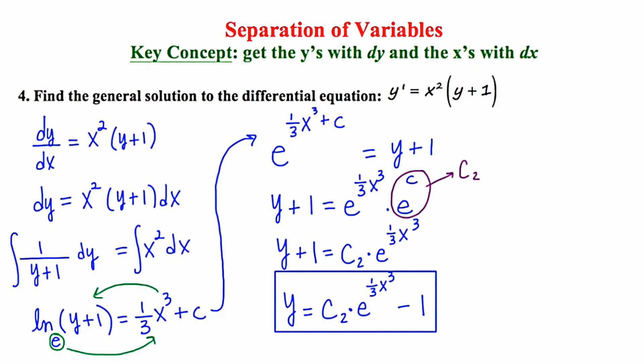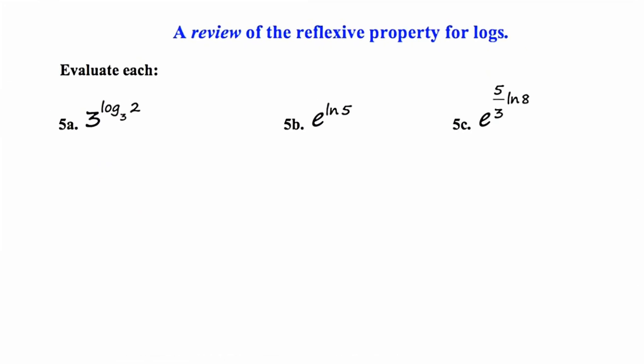Let's take a look at another example. Now we're on slide number five and we're going to do a review of the reflexive property for logs — we did this in an earlier video at the beginning of chapter five, but these skills are required for the next problem. In 5a, it specifically says three to the log two base three. If the base here is the same as the base of the log, then the answer is just the argument of the log, which in this case is two.